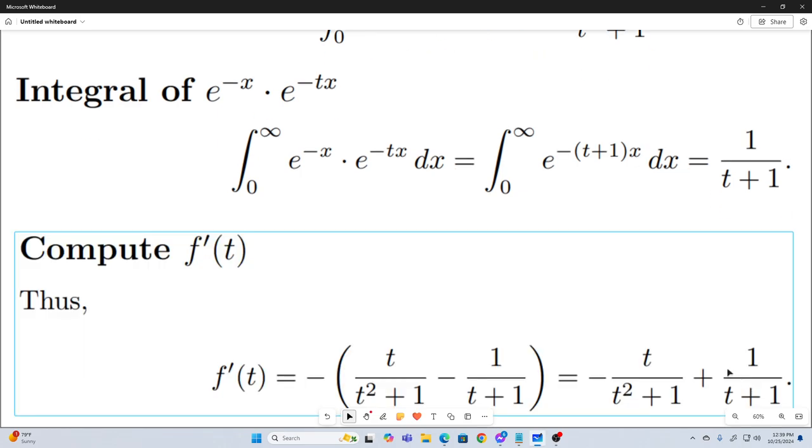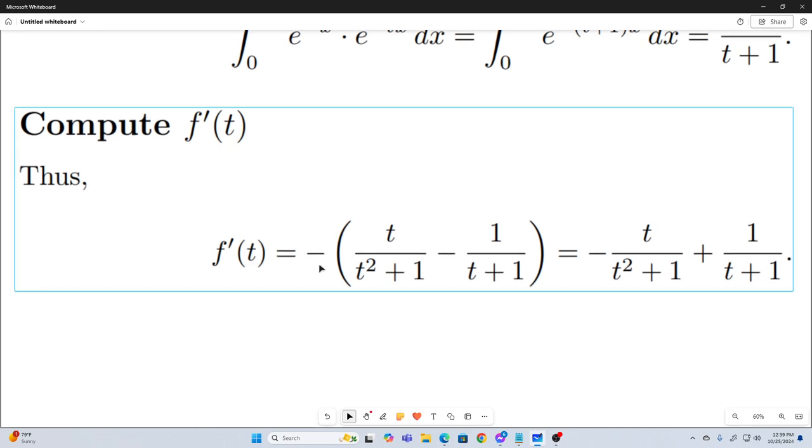And now we just combine them. So don't forget, we had a negative sign to begin with. So we distribute that negative sign. And this is what our f prime of t is. That's what you get when you evaluate our original f prime of t that was defined as an integral.